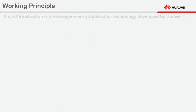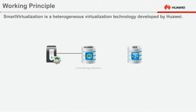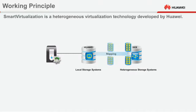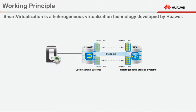Smart Virtualization is a heterogeneous virtualization technology developed by Huawei. It identifies Huawei devices as local storage systems and third-party devices as heterogeneous storage systems. Smart Virtualization maps an external LUN on a heterogeneous storage system to a local storage system and encapsulates the LUN into an E-Dev LUN. A one-to-one mapping is established between the E-Dev LUN and the external LUN.